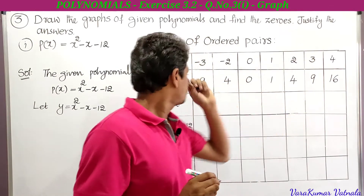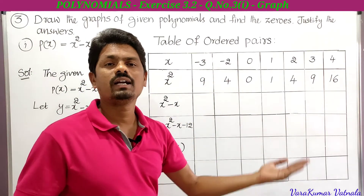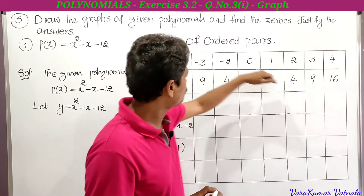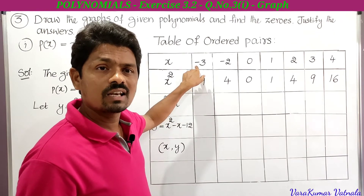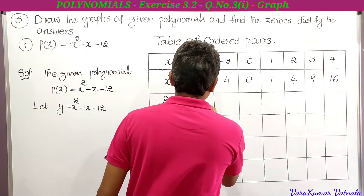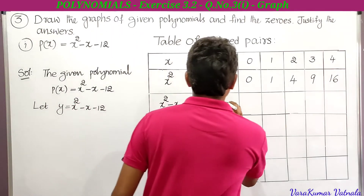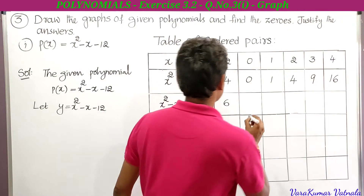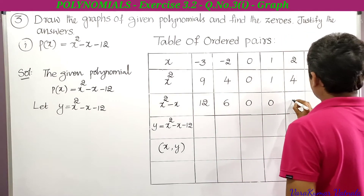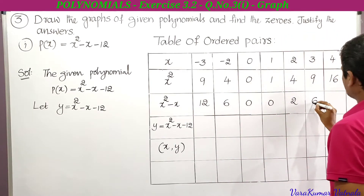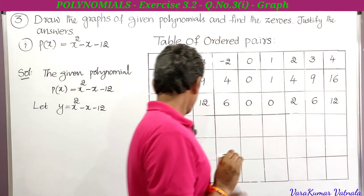Next, we find x² - x by subtracting the x values from x². So: 9 - (-3) = 9 + 3 = 12; 4 - (-2) = 4 + 2 = 6; 0 - 0 = 0; 1 - 1 = 0; 4 - 2 = 2; 9 - 3 = 6; 16 - 4 = 12. These are the x² - x values.